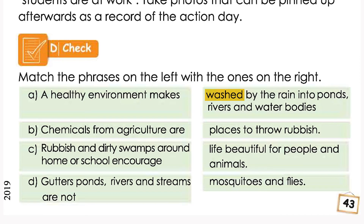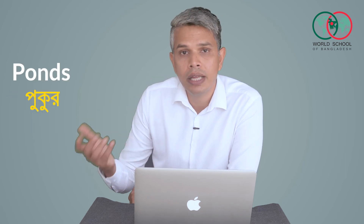Chemicals from agriculture are washed by rain into ponds, rivers and water bodies.